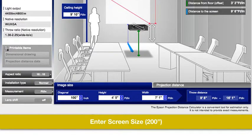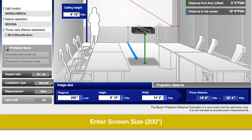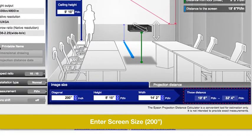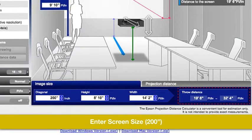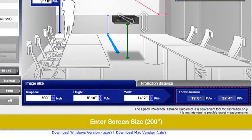Now, enter the screen size, 200 inches. Simple as that, the application will tell you to mount the projector anywhere between 19 feet 6 inches and 32 feet 4 inches to get a 200 inch image.